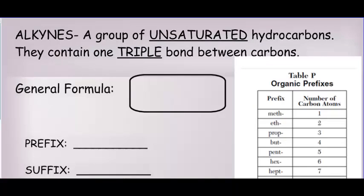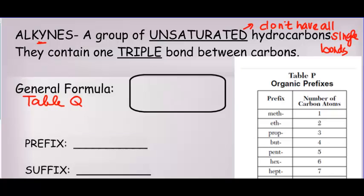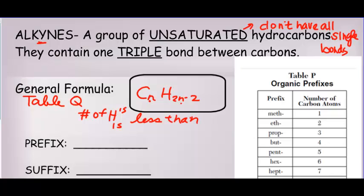The final class of hydrocarbons are the alkynes, and they're unsaturated — meaning they don't have all single bonds. They contain one triple bond. Their general formula, which you can get from Table Q, is CnH2n−2. So to determine your hydrogens, you double your number of carbons and then subtract two. These have less than twice their number of hydrogens compared to carbons.